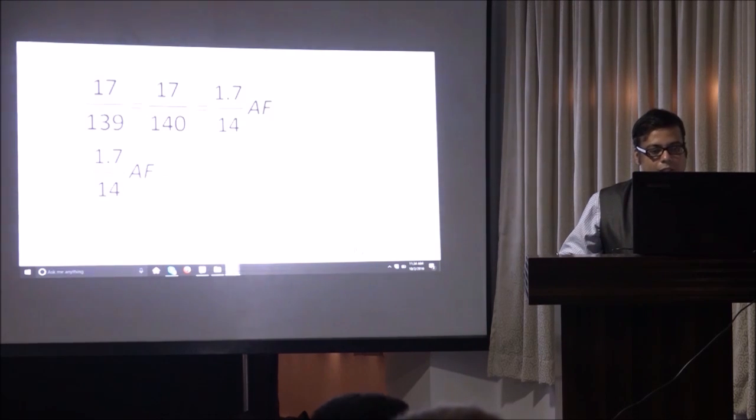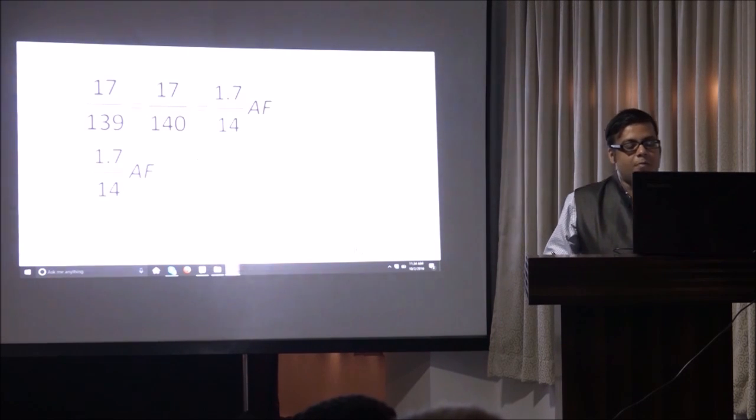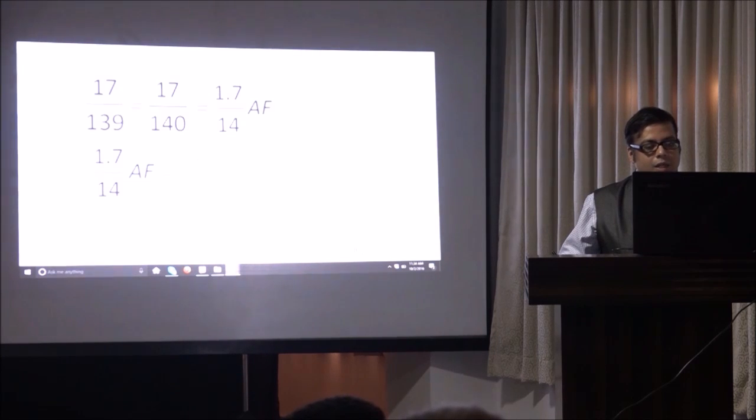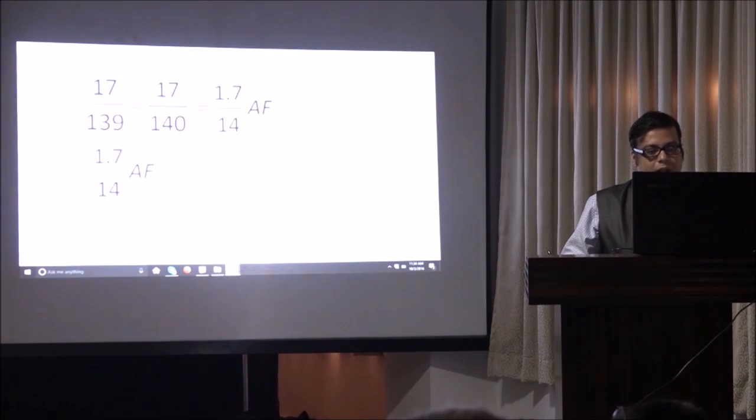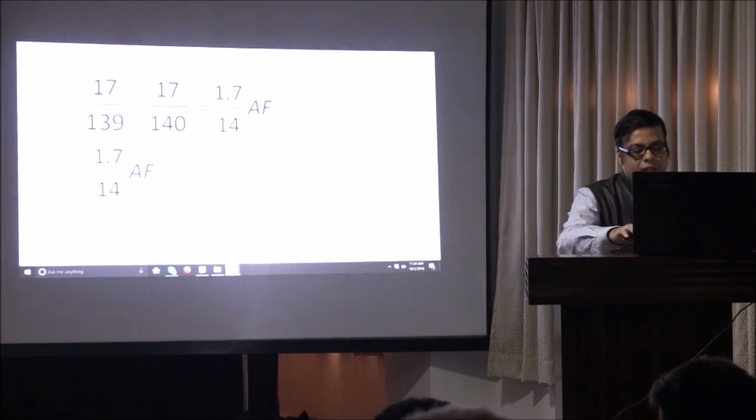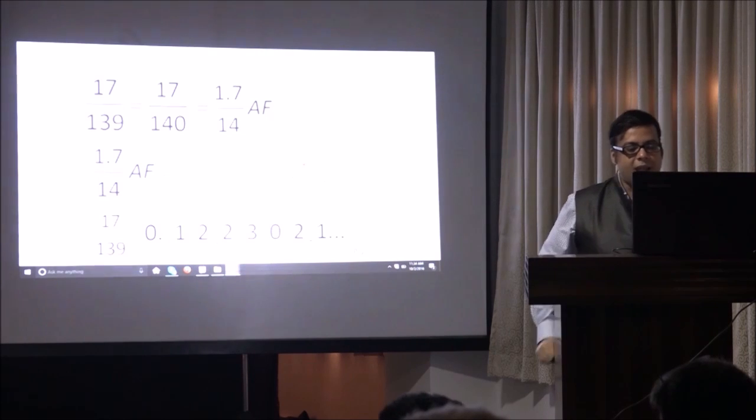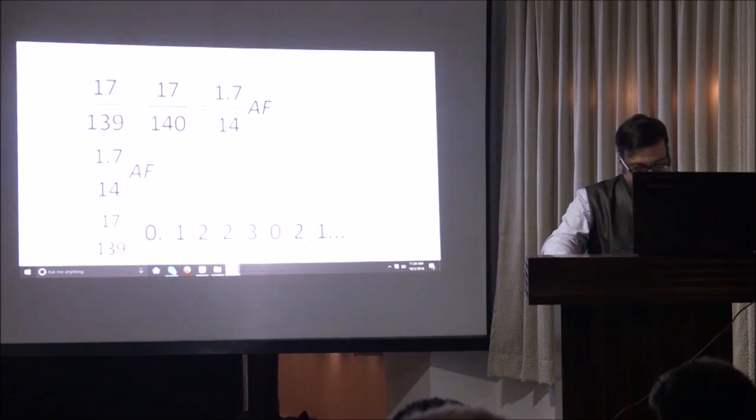17 by 14 is 1, remainder 3. 31 by 14 is 2, remainder 3. 32 by 14 is 2, remainder 4. 42 by 14 is 3, remainder 0. 03 by 14 is 0, remainder 3. So let's check. And that's the answer. 0.1223021 and you can go on with that.